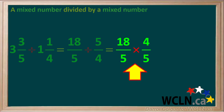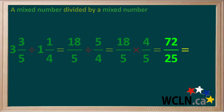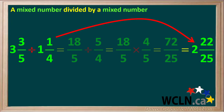Neither of the diagonals will simplify to lower terms, so we just multiply these two fractions together. Multiplying the numerators, 18 times 4 gives us 72, and multiplying the denominators, 5 times 5 gives us 25. So we're left with the fraction 72 over 25. This is an improper fraction, so we need to change it to a mixed number. 25 goes into 72 two times; 25 times 2 is equal to 50, and 72 minus 50 is 22. So our remainder is 22 over 25. Our final answer to 3 and 3 fifths divided by 1 and 1 quarter is 2 and 22 twenty-fifths.